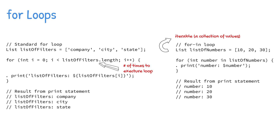The standard for loop takes three parameters. The first parameter initializes the variable i as an integer counting each loop executed. Since the list uses zero-based indexing, i is initialized with zero and not one. The second parameter controls how many times to loop by comparing the current number of loops (the i variable) to the total number of loops — i must be less than the number of rows in the list. The third parameter increases i with each loop. Inside the loop, the print statement shows each value from the list.